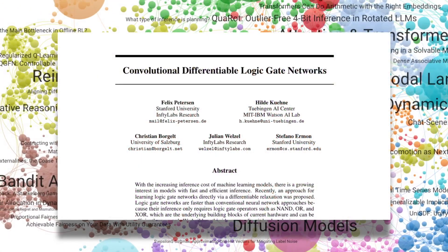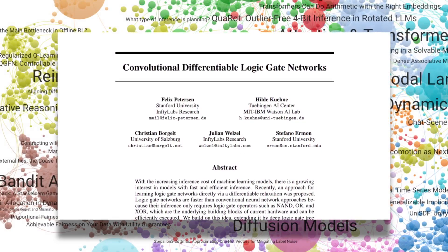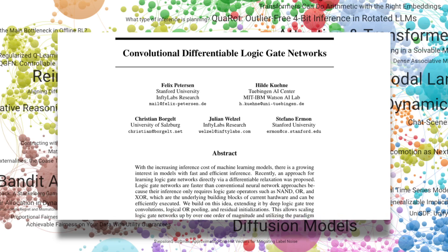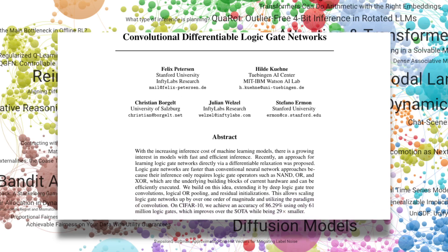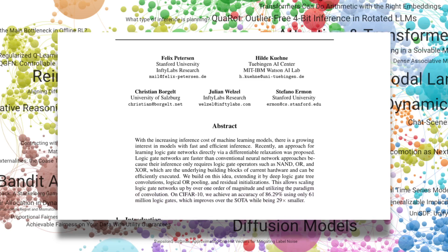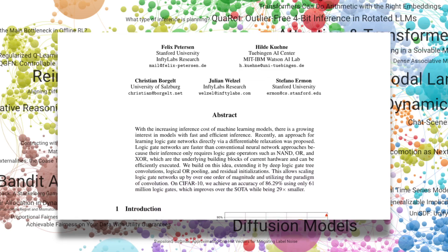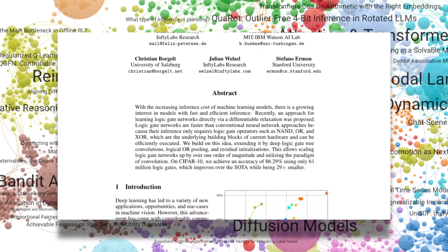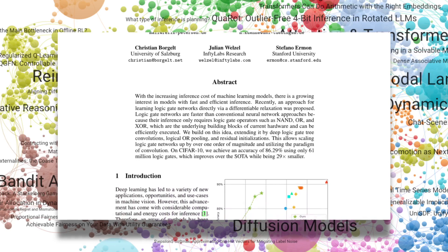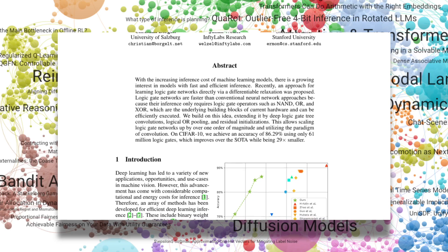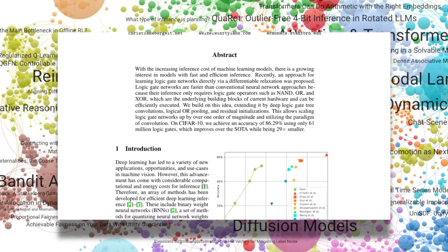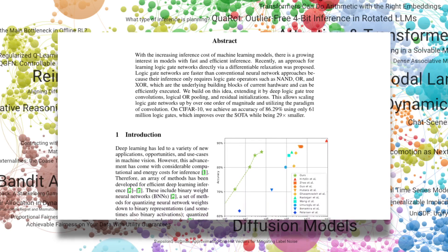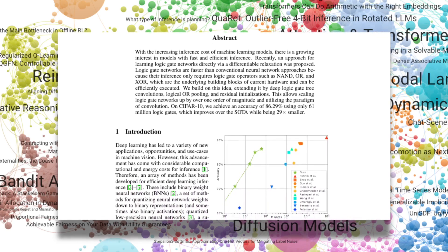Next, we have differentiable logic gate networks. These models use a relaxed, differentiable formulation of logic gates to achieve faster, more efficient inference compared to traditional neural networks. By introducing deep logic gate tree convolutions, or pooling, and residual initializations, the authors scaled these networks, achieving 86.29% accuracy on CIFAR-10 using just 61 million logic gates, being 29 times smaller than competing methods.